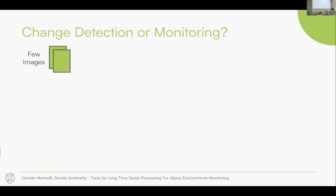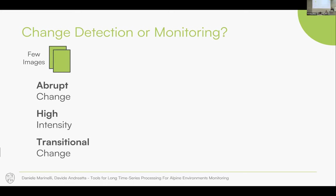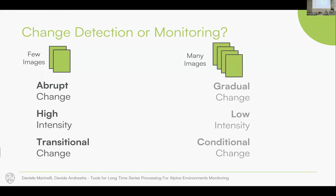We shifted from a case where we had few images and could detect mainly abrupt, high-intensity, transitional changes — those that strongly affected the spectral signature. Now, with many images, we are able to detect gradual changes, low-intensity changes that are more subtle and harder to detect, and conditional changes that modify the condition of land cover without actually changing the land cover class.